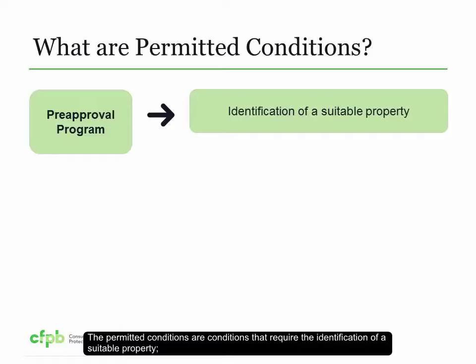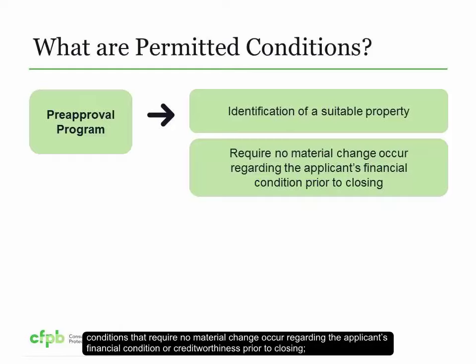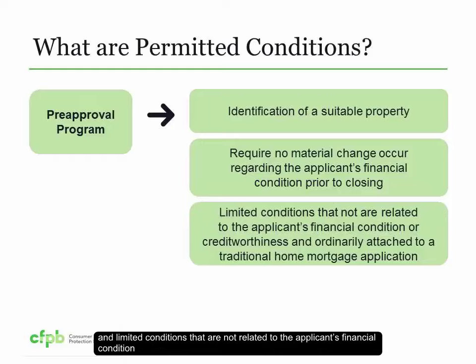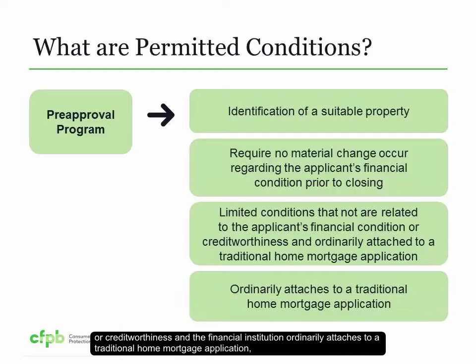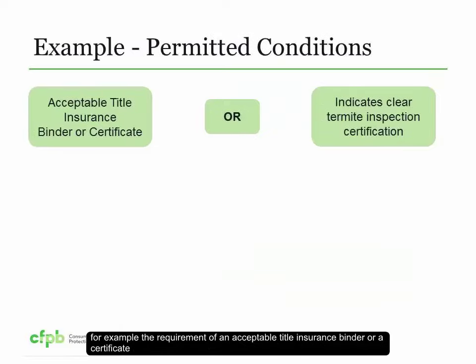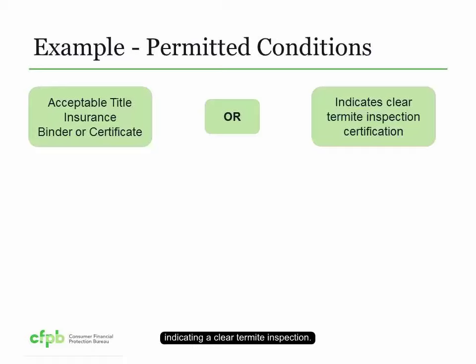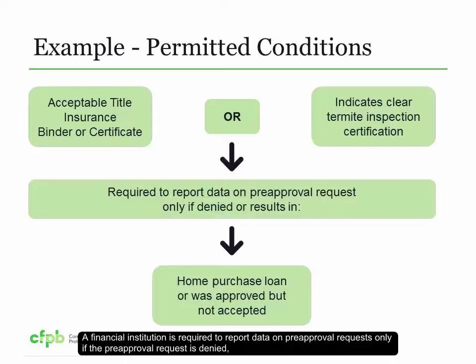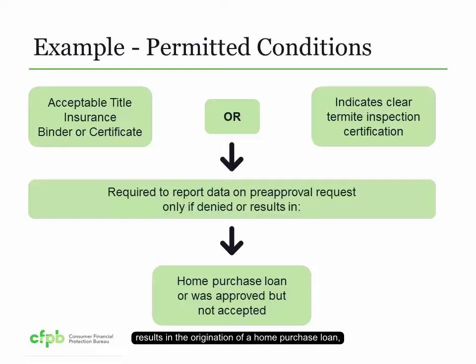A request for a pre-approval is considered an application under Regulation C if the request is for a home purchase loan that is not secured by a multifamily dwelling, is not for an open-end line of credit or reverse mortgage, and is reviewed under a pre-approval program. A pre-approval program is one in which the financial institution conducts a comprehensive analysis of the applicant's credit worthiness, resources, and other matters typically reviewed as part of the credit evaluation program, and then issues a written commitment that is for a home purchase loan valid for a designated period of time up to a specified amount and subject to only specifically permitted conditions. The permitted conditions are those that require the identification of a suitable property, no material change regarding the applicant's financial condition or credit worthiness prior to closing, and limited conditions not related to the applicant's financial condition ordinarily attached to a traditional home mortgage application, such as the requirement of an acceptable title insurance binder or a certificate indicating a clear termite inspection. A financial institution is required to report data on pre-approval requests only if the pre-approval request is denied, results in the origination of a home purchase loan, or was approved but not accepted.